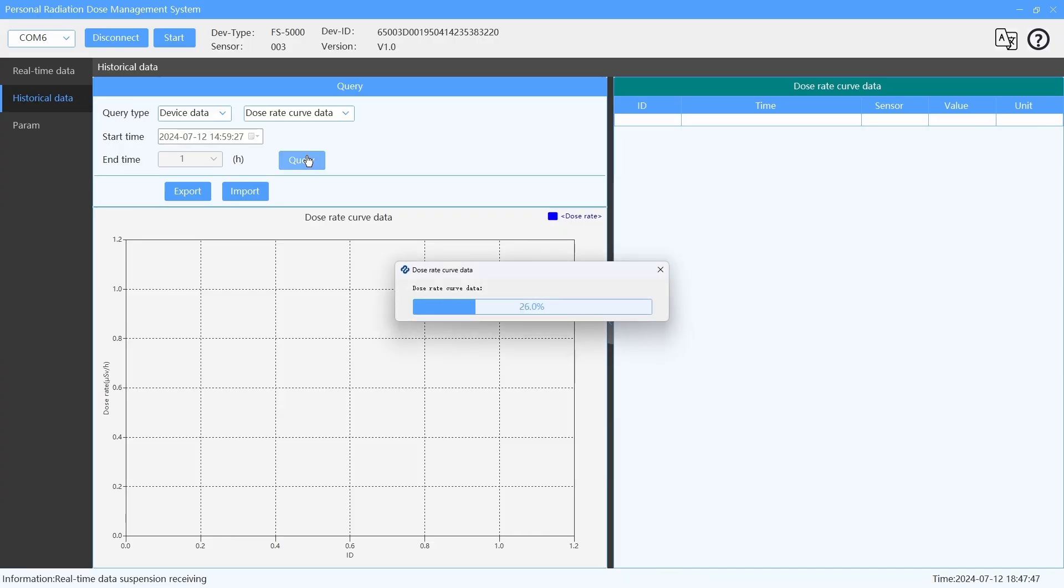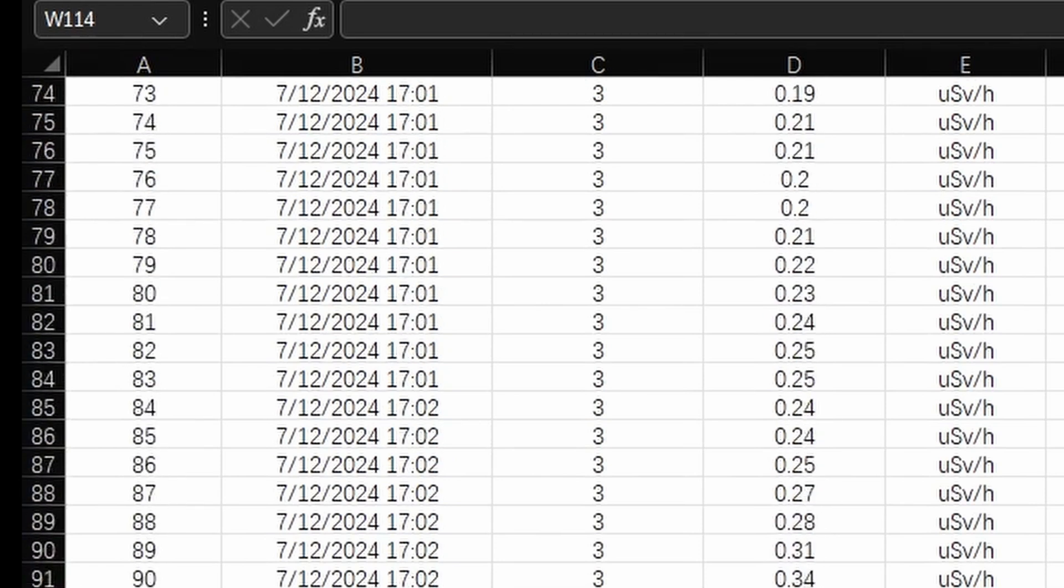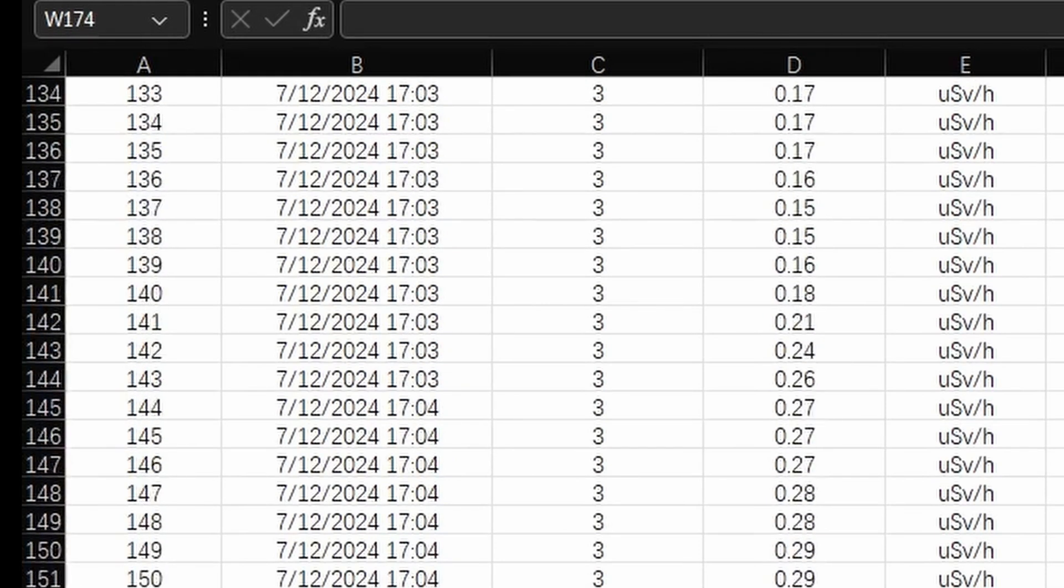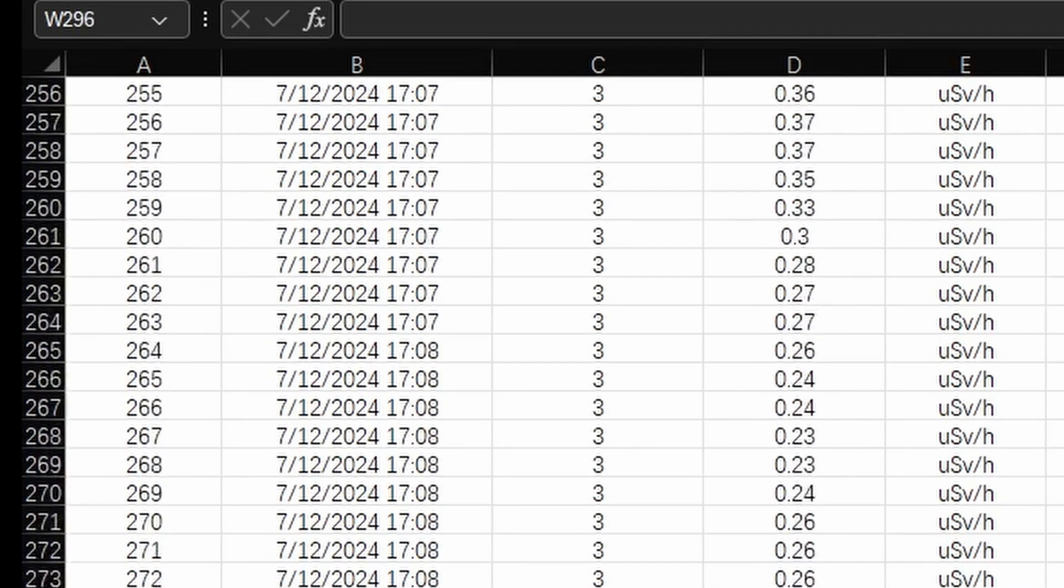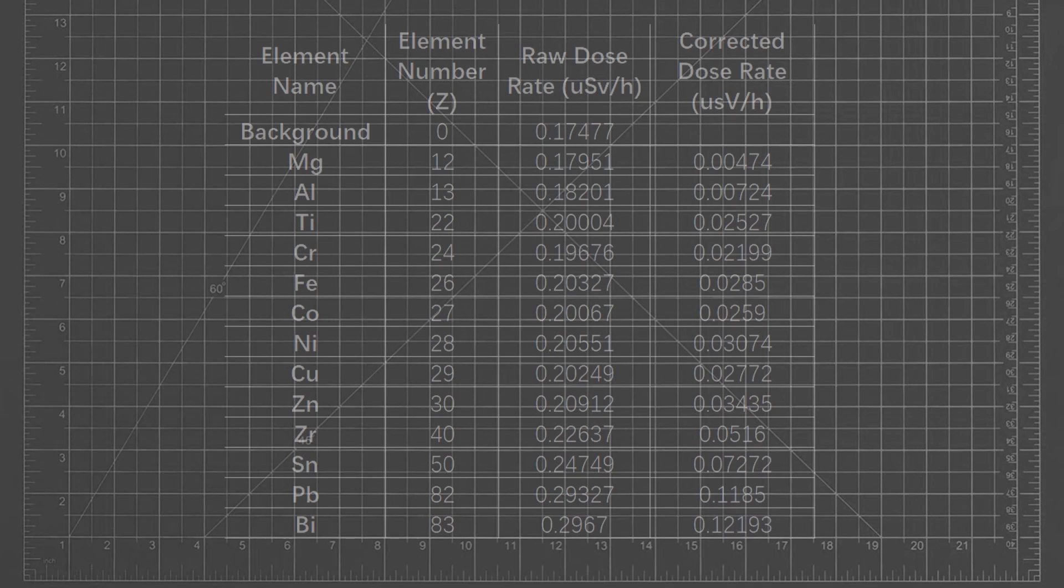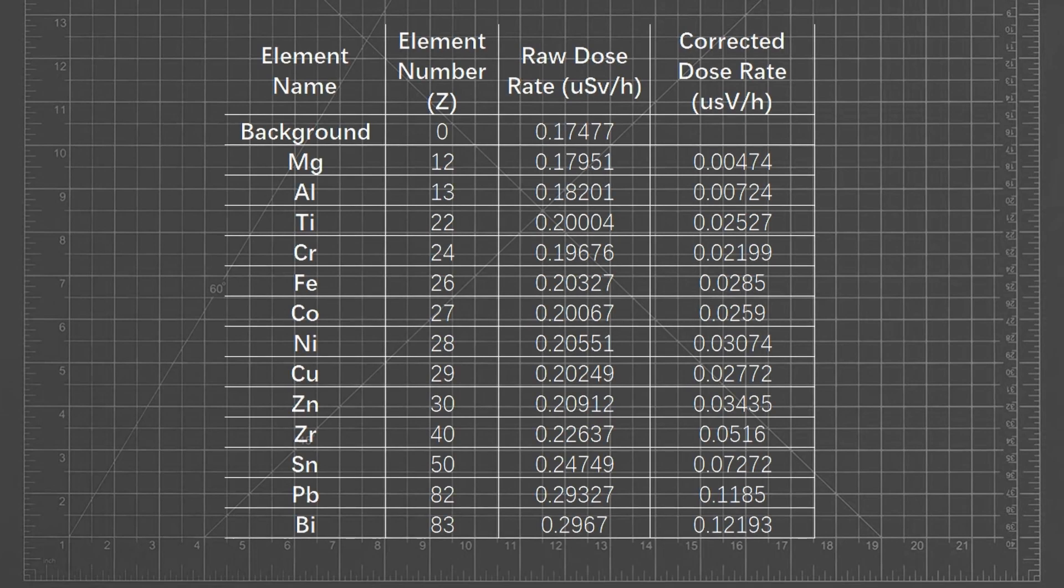Although the PC software for the FS5000 is pretty clunky, the data offload process is fairly smooth. And once the data has been imported into Excel, obtaining a 15-minute average is easy. Put simply, the more data you have to work with, the more accurate the result will be. Once all the results are tabulated and the background is subtracted, we can see there is a strong correlation between the measured dose rate and the element number of the material being tested.